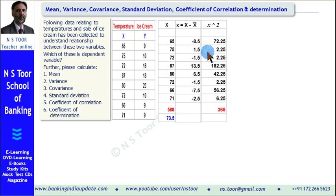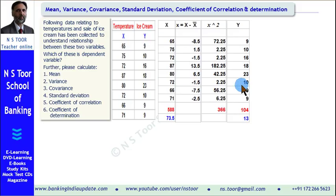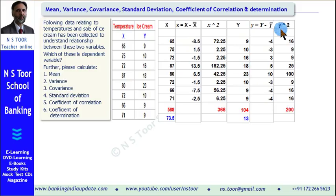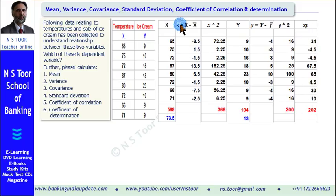The same process is followed for y. We have placed the y values here. First, we calculate the average — the total is 104, there are 8 items, so the mean of y is 13. Then we calculate the deviation from the mean, represented by small y. The deviations are calculated as with x — for example, 10.5. Then we compute y squared and add it up. Finally, we calculate the product xy: for example, minus 8.5 multiplied by minus 4 gives positive 34, and so on. We find the total of xy as well.